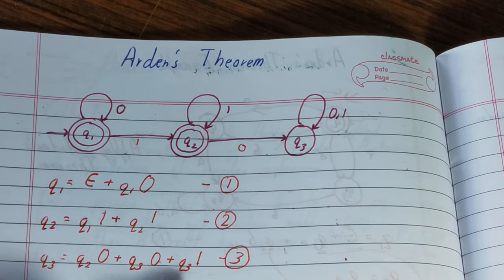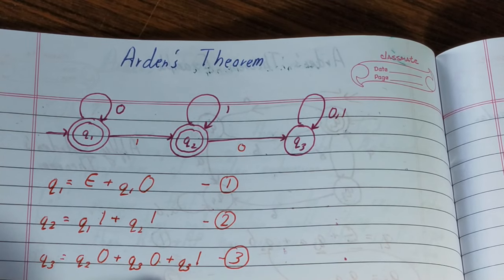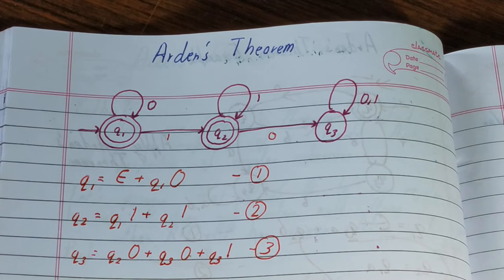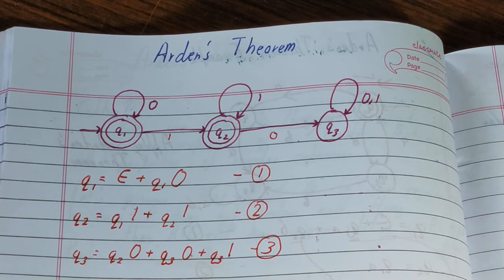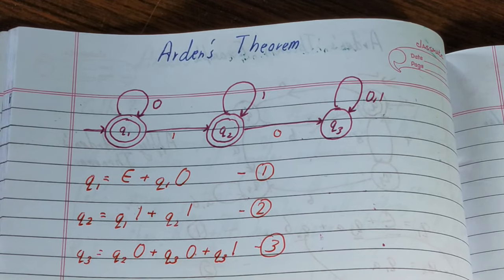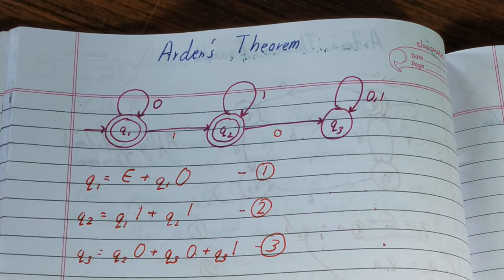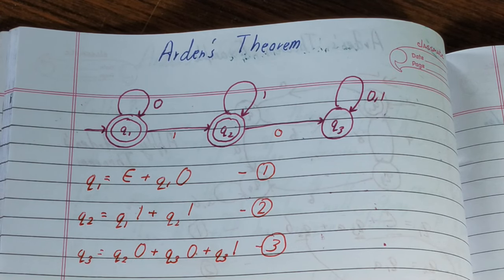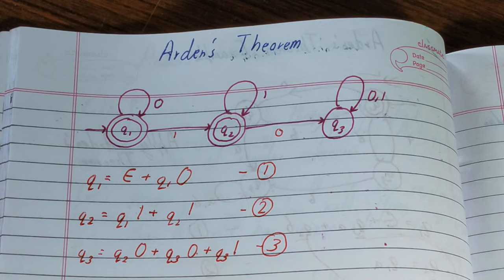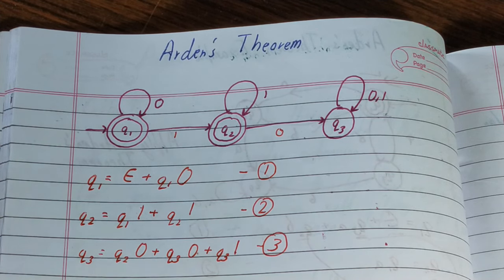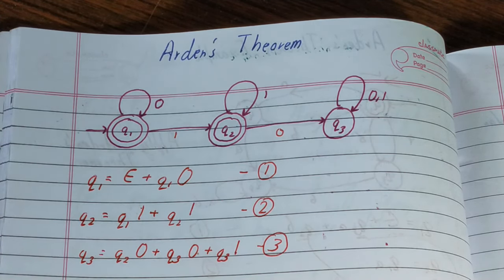Now we need to find out the regular expressions. The question arises: how many regular expressions do we have to derive? We have to derive as many regular expressions as there are final states. If there are two final states we derive two, if three then three, if one then one. In this case there are two final states, so we'll find out two regular expressions.